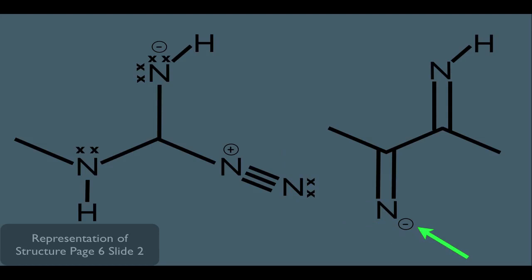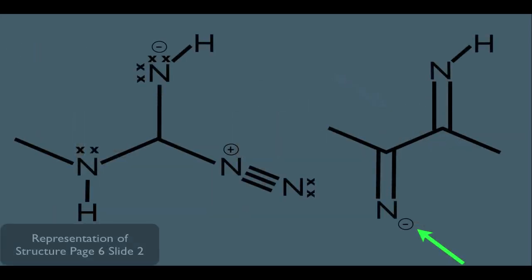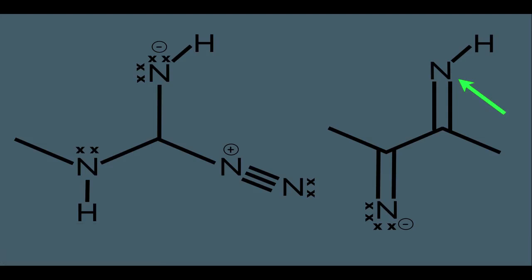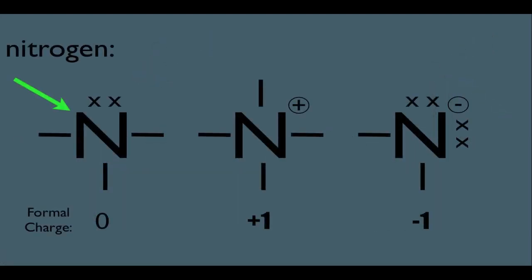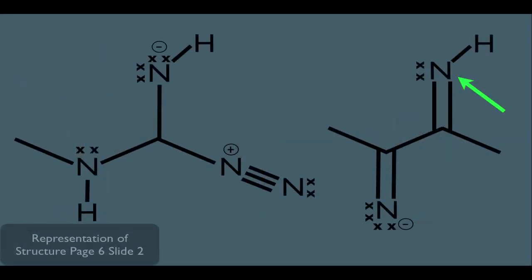Now this nitrogen has a negative formal charge. Remember, negative means two bonds and two lone pairs. Careful — we're counting the double bond as the two bonds, so all we need to add are the two lone pairs of electrons. And lastly, this nitrogen: we consider the double bond going down as two bonds, and one bond to the hydrogen in the upper right as the third bond. No formal charge with three bonds means that nitrogen needs one lone pair of electrons, so that completes it.